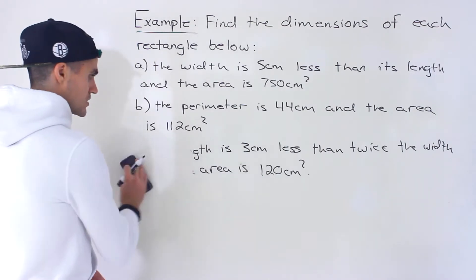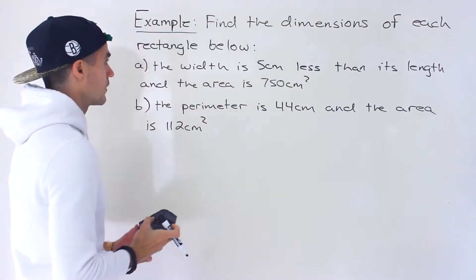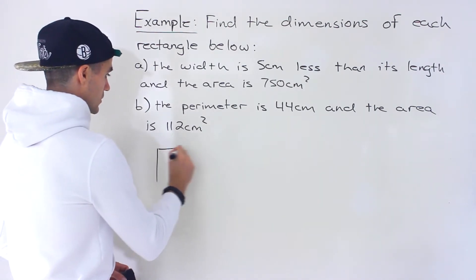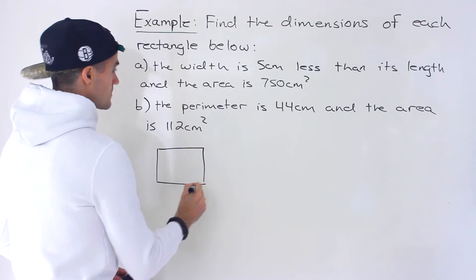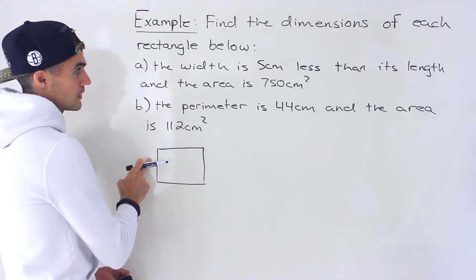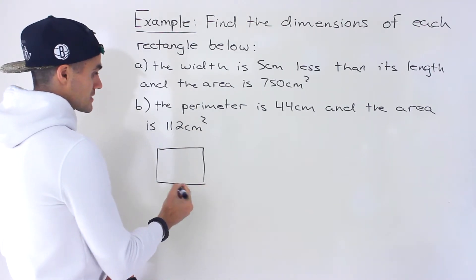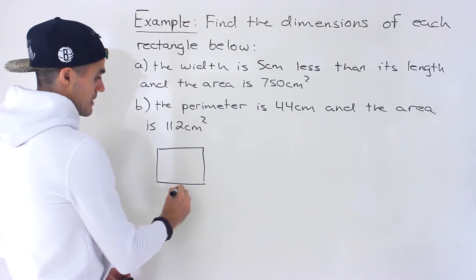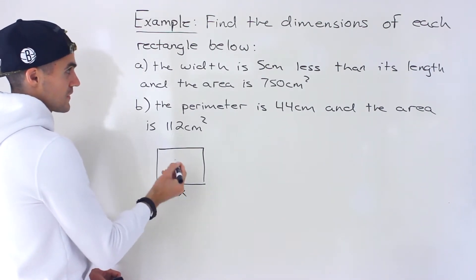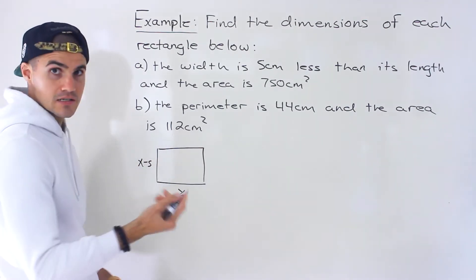I'm going to erase part C to give myself some room to work — I'll bring it back later in the video. Let's start off with diagrams for these scenarios. In part A, this one's pretty simple. We're told the width is five centimeters less than the length. So I'm going to let the length be x, and then the width, being five centimeters less than the length, is x minus five.